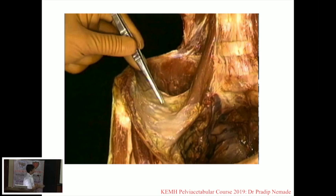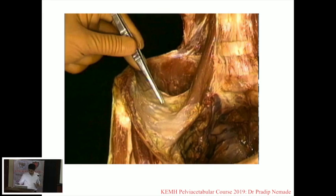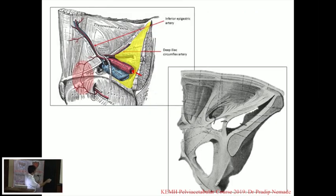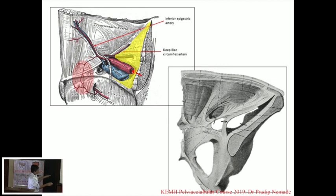This is what the cadaveric dissection looks like. You can see the iliacus, the psoas, the iliac crest, and the investing fascia of the iliacus. This fascia is very thin in the posterior aspect, but as it comes anteriorly, it starts becoming thicker and thicker. The fascia attaches medially to the iliopectinal brim till the midpoint, and laterally to the iliac crest. Anteriorly, it continues onto the inguinal ligament where the iliacus exits, and from there it forms an arch — the iliopectinal arch — which is a very tight structure.